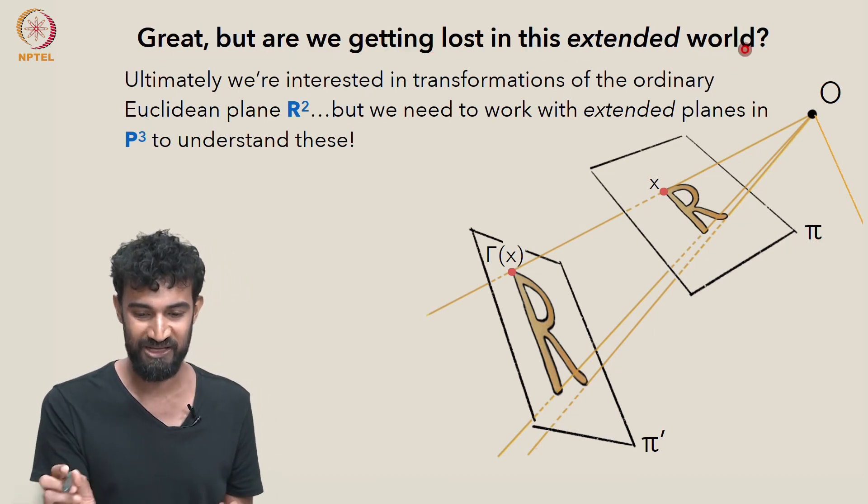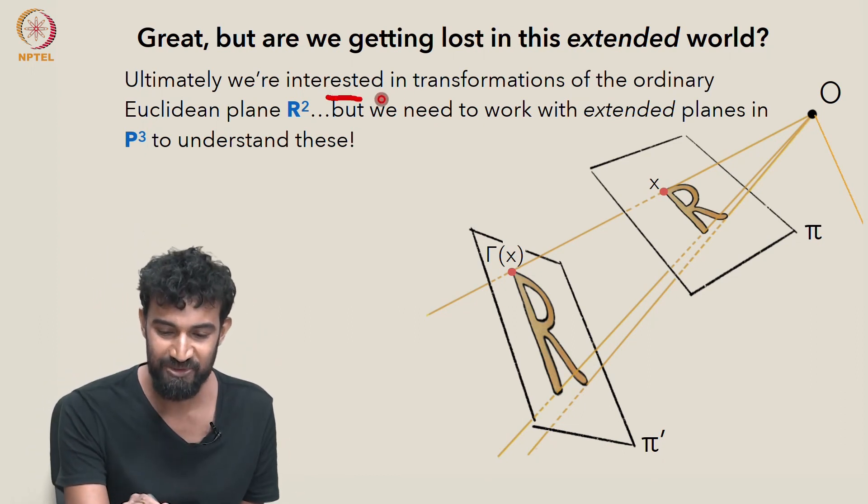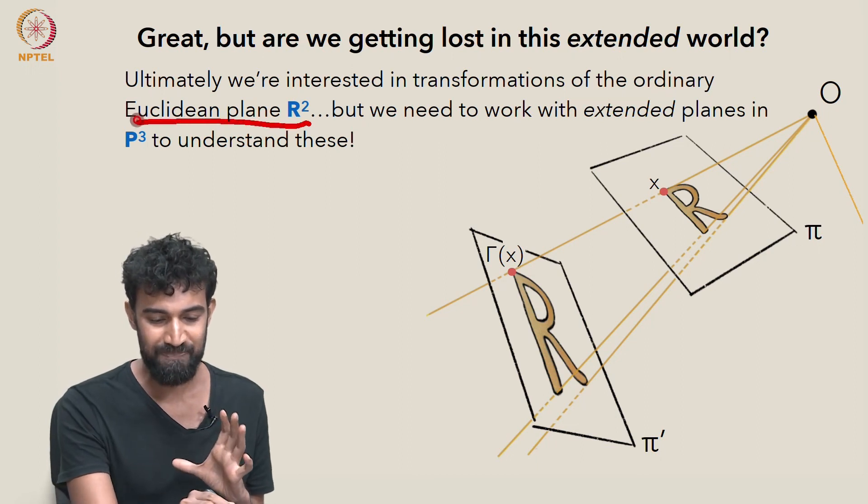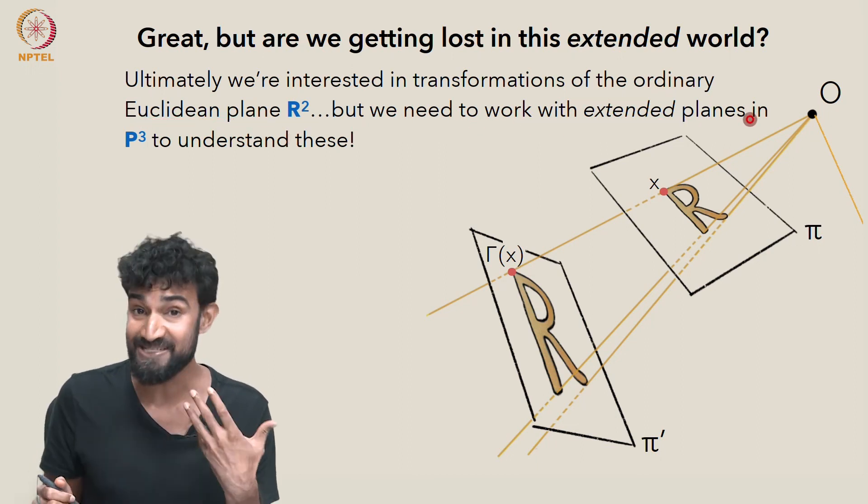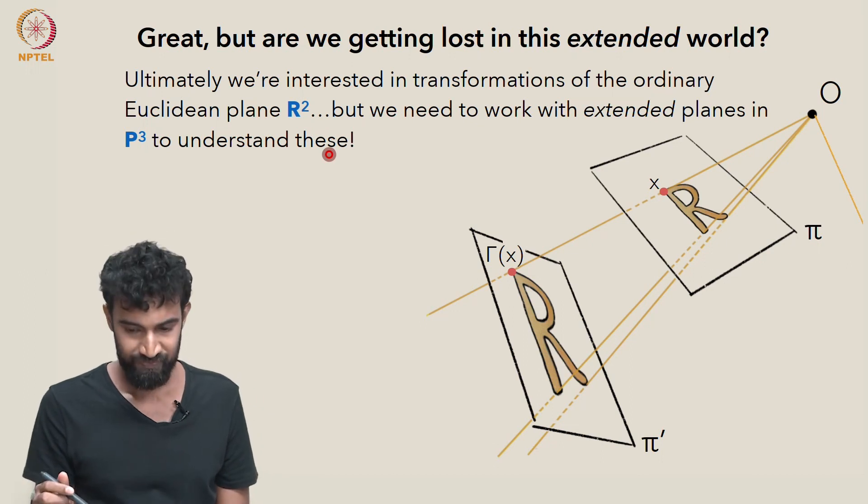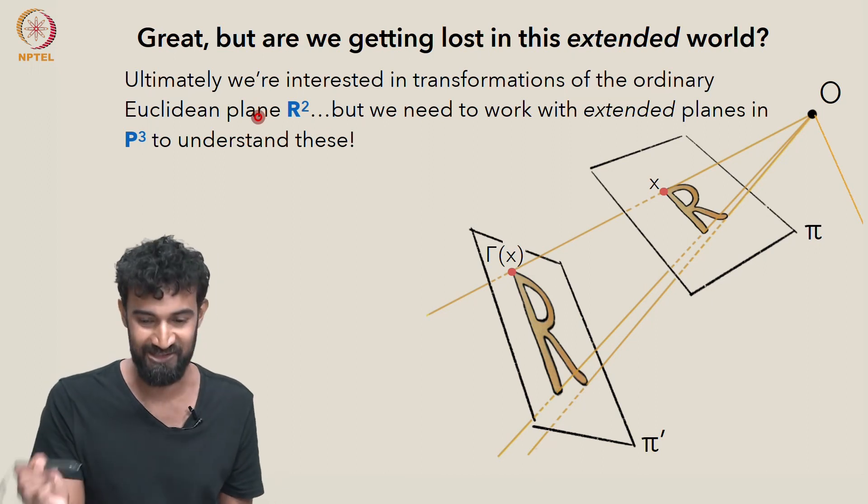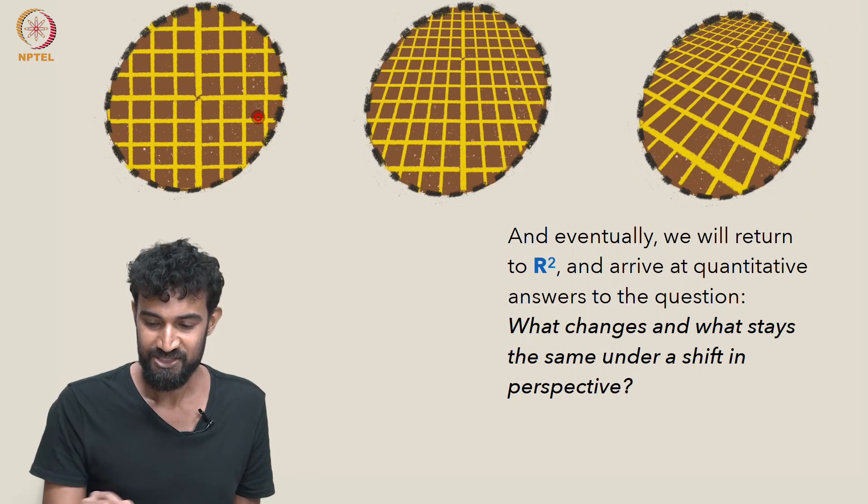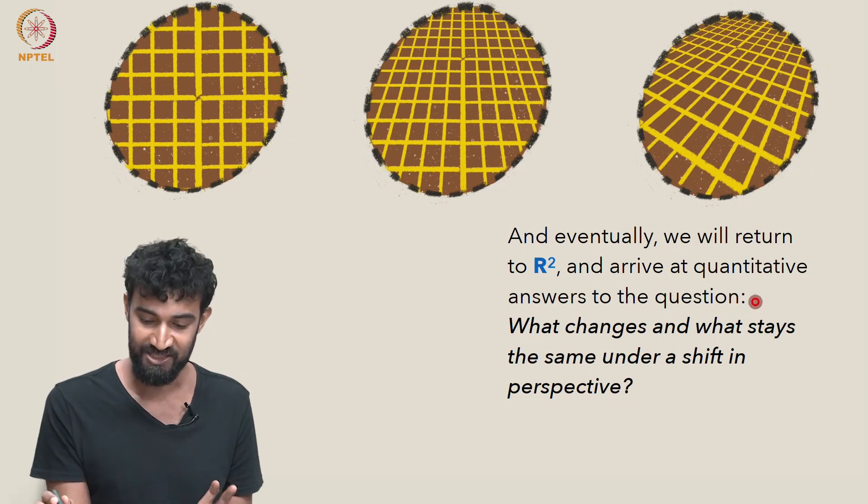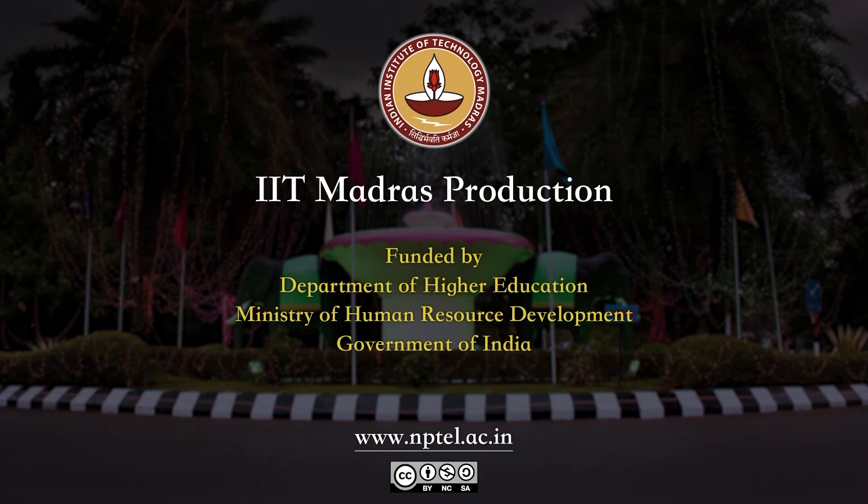And this seems great, but I just want to make sure we're not getting lost in this extended world with points at infinity and lines at infinity. Ultimately, we want to know about transformations of the ordinary Euclidean plane R2. So we are going to get back to that, but we do need to work with these extended planes in P3 in order to understand transformations of R2. I just want to reassure everyone that we will get back to R2 and understand the transformations of R2 finally at the end of this journey. Eventually, not only will we return to R2, but we'll also arrive at some quantitative answers to the question we asked of what changes and what stays the same under a perspectivity.